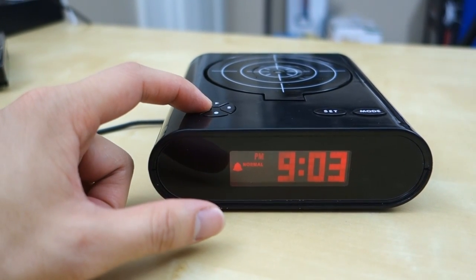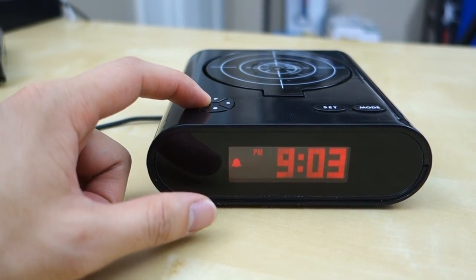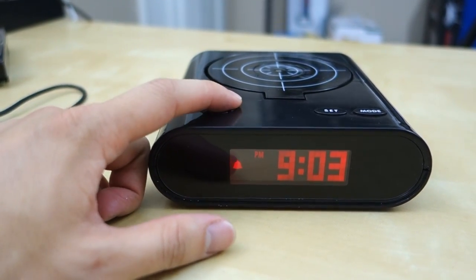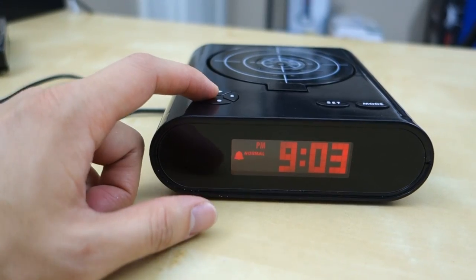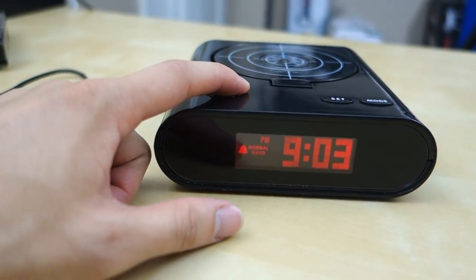And now it's in the alarm mode. You can hold down again. And then you can press S to set the alarm on or off. Or you can just cycle to normal or hard mode.